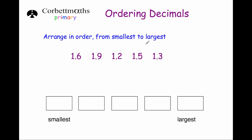The smallest number in the tenths column is 2, so 1.2 is the smallest. Looking at what's remaining, we've got 6, 9, 5 and 3 in the tenths column. The 3 is the next smallest, so 1.3 is second.